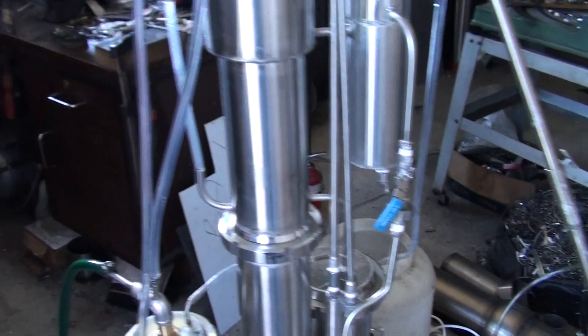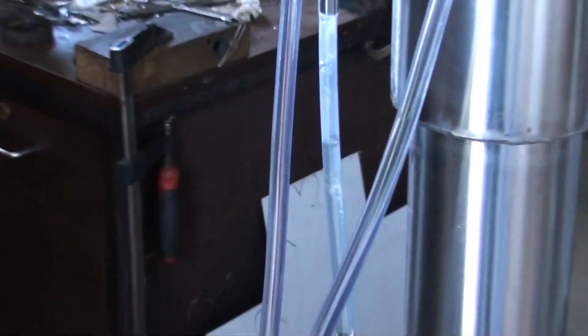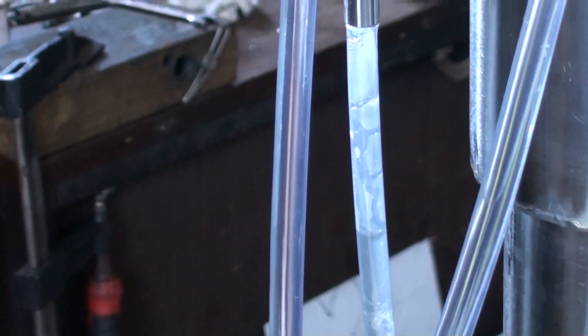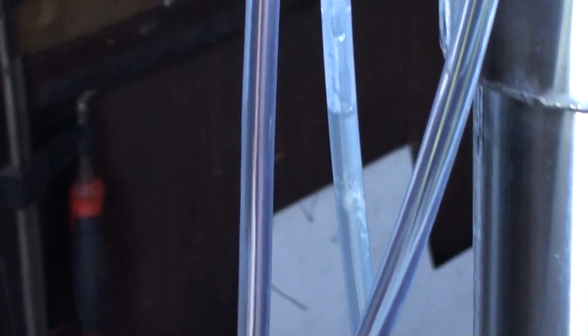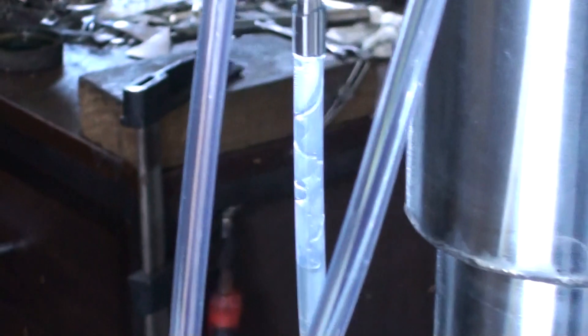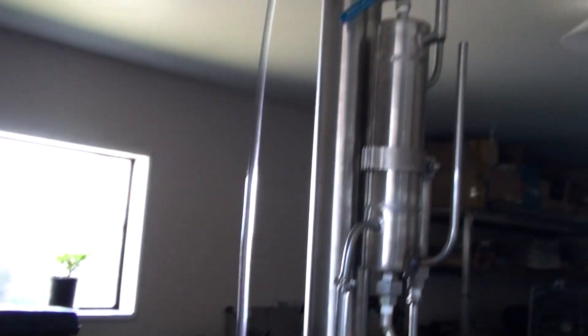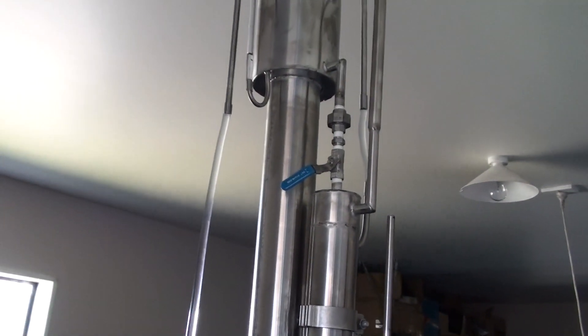This is the wash supply valve and make sure that your level is somewhere two-thirds from the bottom. It should be kept this way. So after that, you're slowly opening this valve.